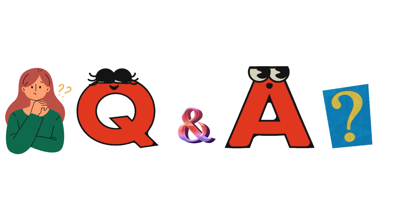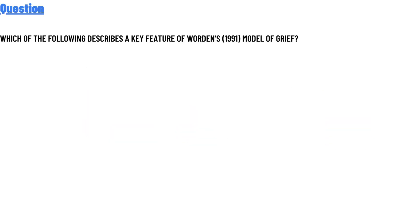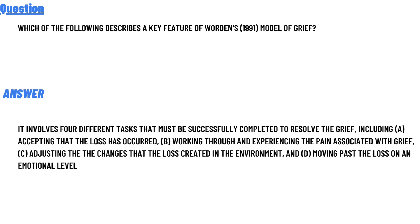Today's question is: which of the following describes a key feature of Worden's 1991 model of grief? The correct answer is: it involves four different tasks that must be successfully completed to resolve grief.